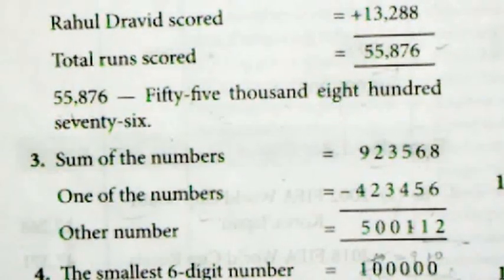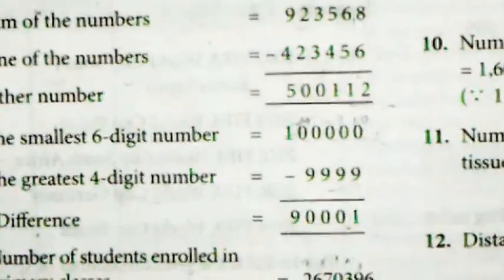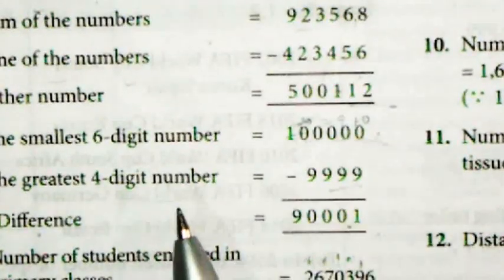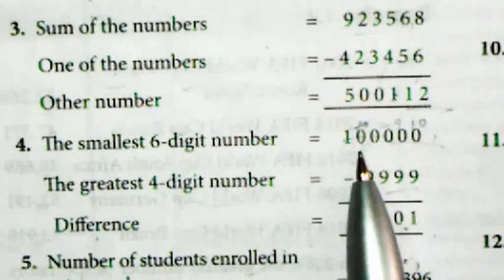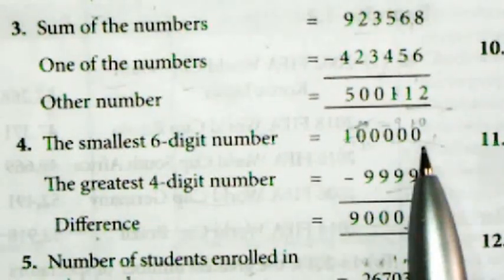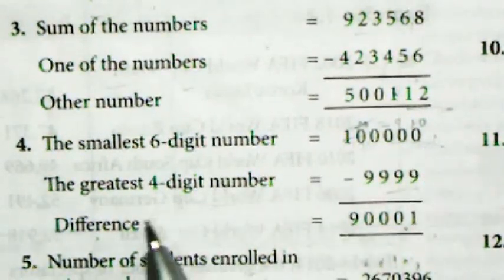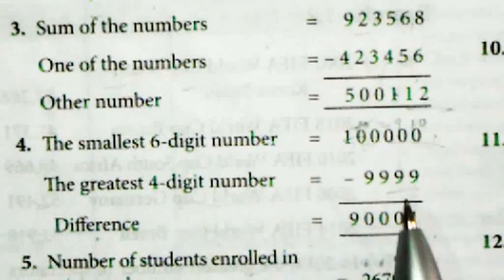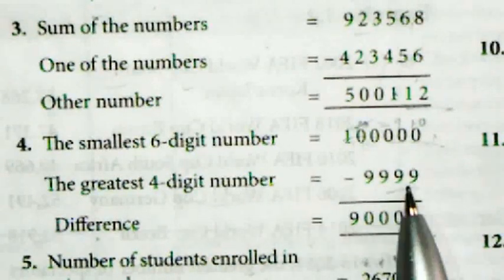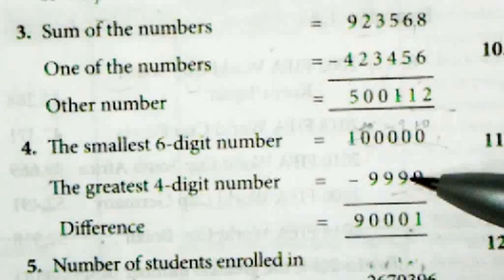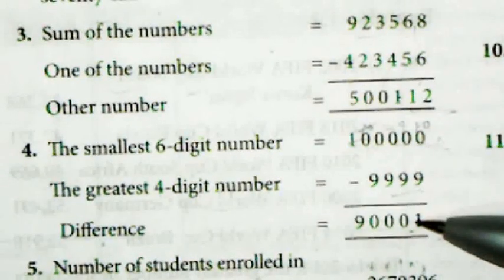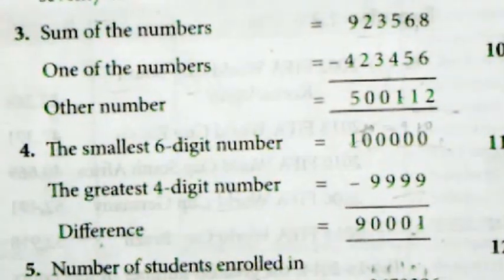Next sum: smallest six-digit number diya hai — jo hota hai 1,00,000. Greatest four-digit number — jo hota hai 9,999. Difference nikalna hai in dono ka. So hum smallest number mein se greatest number ko subtract kar denge.